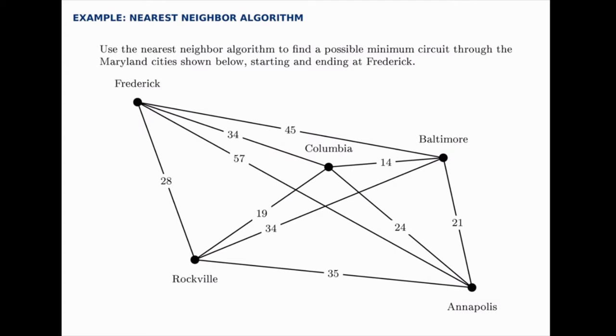We haven't visited anywhere yet, so we have our pick from these four possibilities. The shortest distance going out from Frederick is down to Rockville — 28 miles. So we'll start by going along that edge.